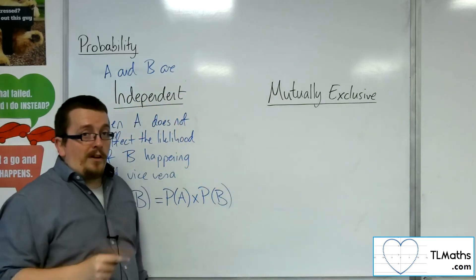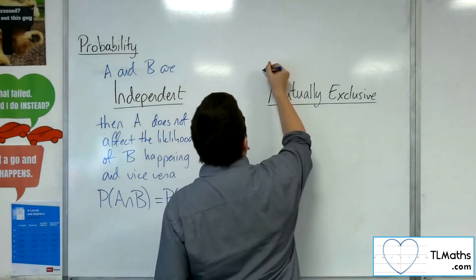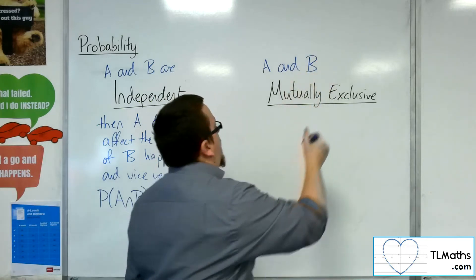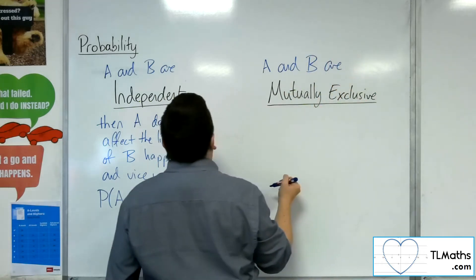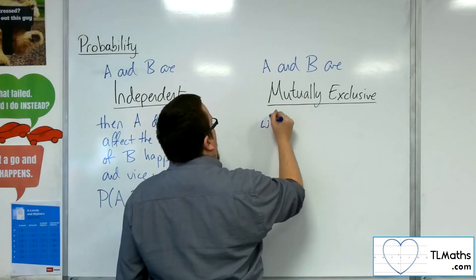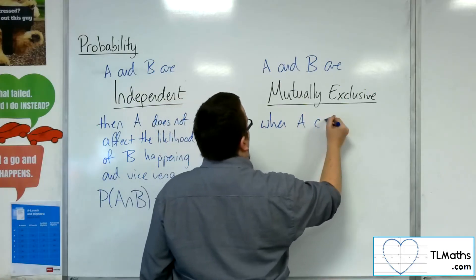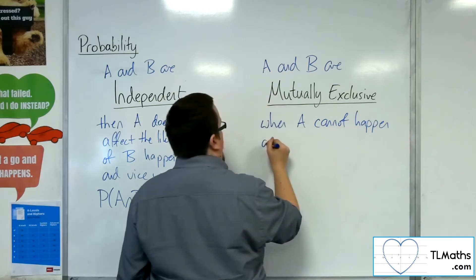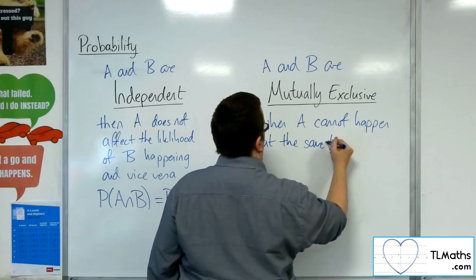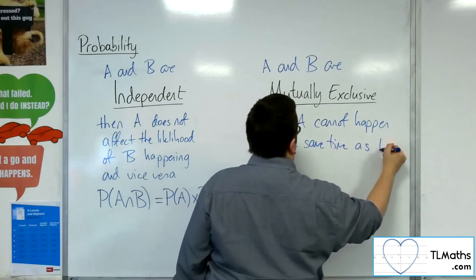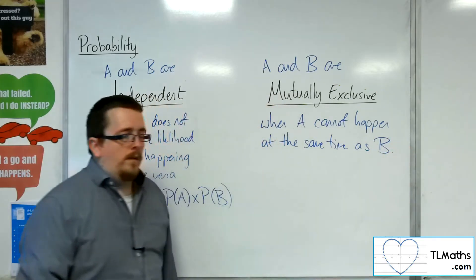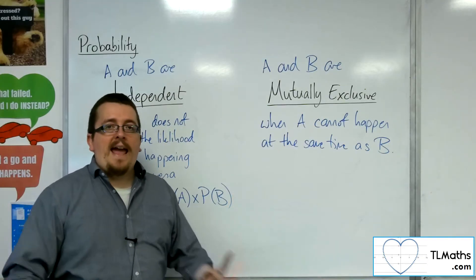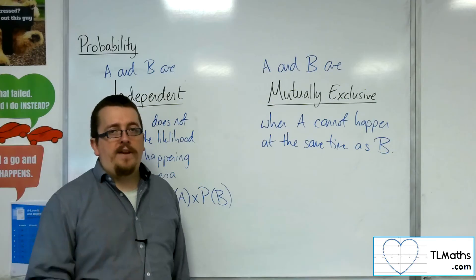Now, mutually exclusive. A and B are mutually exclusive when A cannot happen at the same time as B. So if they cannot happen at the same time, then A and B are mutually exclusive events.